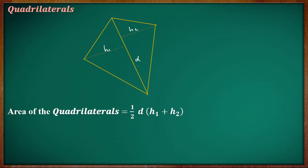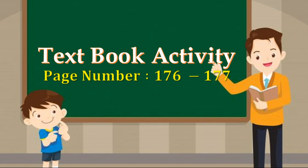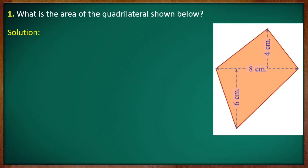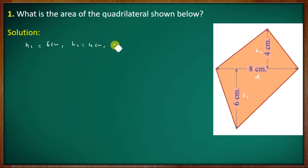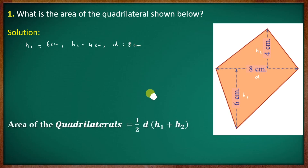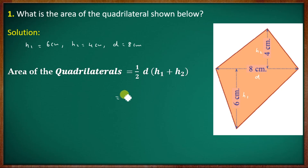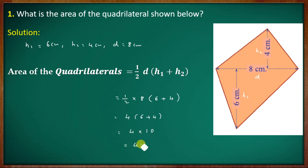This is the area of a quadrilateral. H1 is equal to 6 cm, H2 is equal to 4 cm. The area of a quadrilateral is 1/2 into D into (H1 + H2): 1/2 into D=8, H1=6, H2=4. So 1/2 into 8 into (6+4) = 1/2 into 8 into 10 = 4 into 10 = 40 cm².